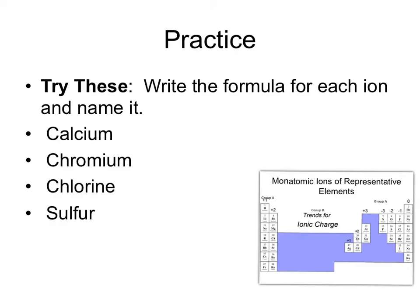All right, let's do some practice. We're going to write the formula for each ion and name it. We're going to start off with calcium. If we go to our periodic table, you will notice that it is right here. It is in column 2, and so its charge is going to be plus 2. So we're going to write the symbol for calcium, and then we are going to put the plus 2 as a superscript.